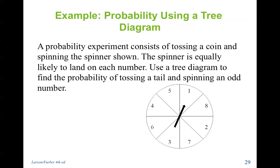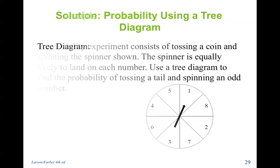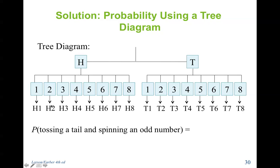A probability experiment consists of tossing a coin and spinning the spinner shown. The spinner is equally likely to land on each number. Use a tree diagram to find the probability of tossing a tail and spinning an odd number. What are our odd numbers here? We have 1, 7, 3, and 5. So four odd numbers. And if we're tossing a coin and we want a tail, that's one of our two choices. So a tree diagram, we're going to start with our head and our tail and then one of our possible eight choices here. What I want to know is the probability of tossing a tail and spinning an odd number. There are 4 choices out of all the possible outcomes of 16. So we have 4 divided by 16 or 1 fourth or .25. You could also change that to 25%.